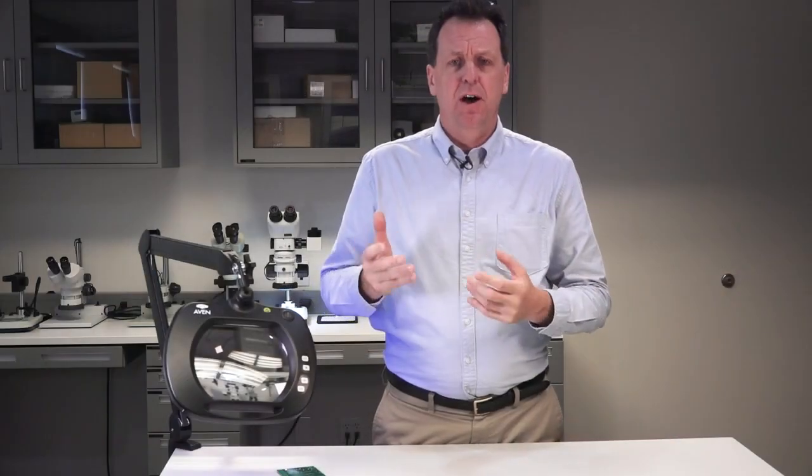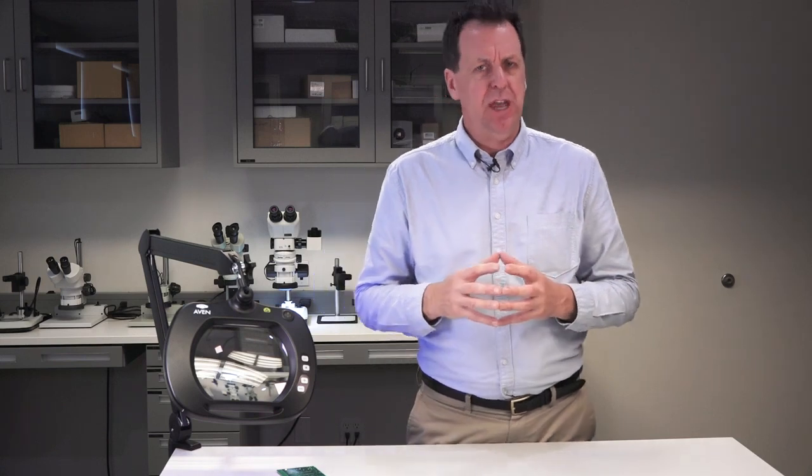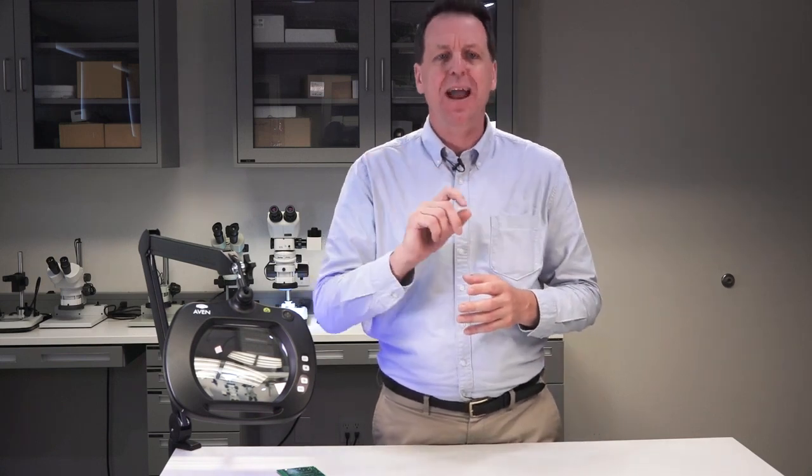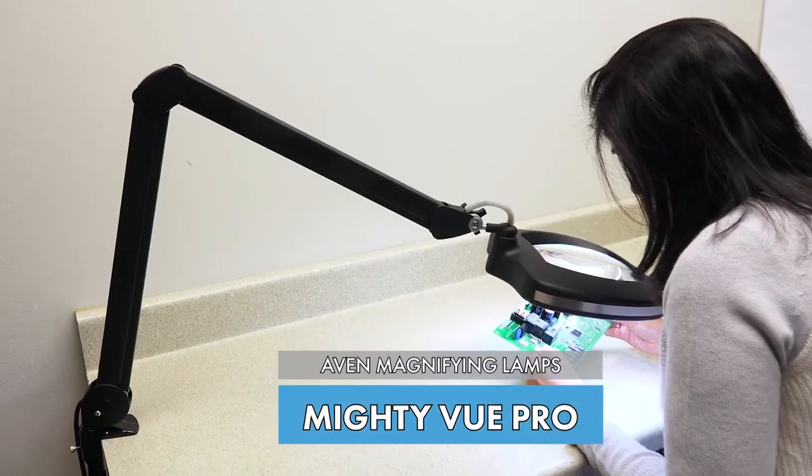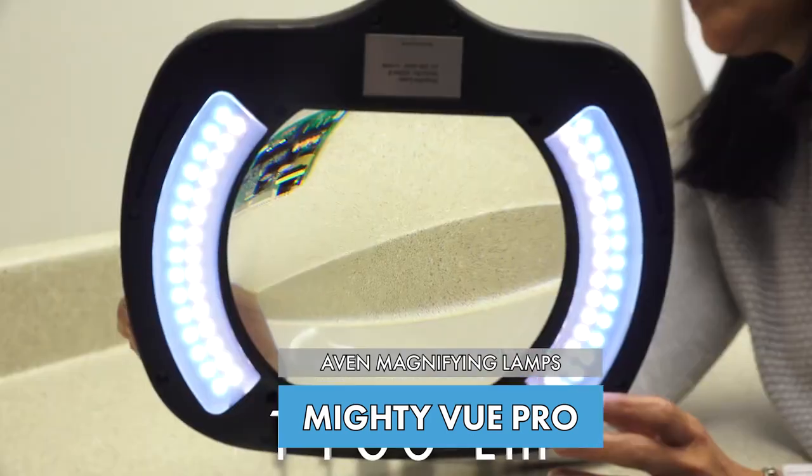Now I'm going to introduce the additional category that we have called the MightyView that's M-I-G-H-T-Y-V-U-E MightyView line of Avon LED magnifier lights and these are rectangular lenses plus the MightyView Pro which I'm going to talk about next has a color adjustment.